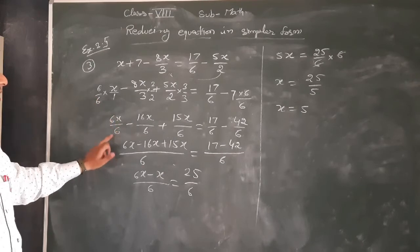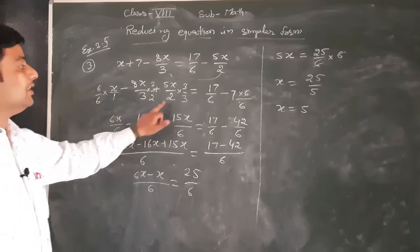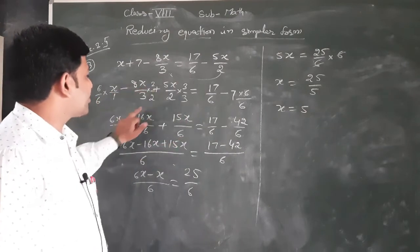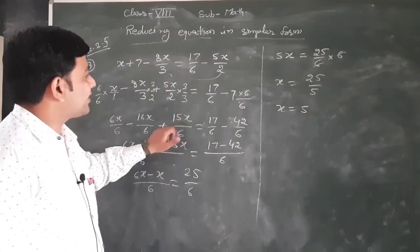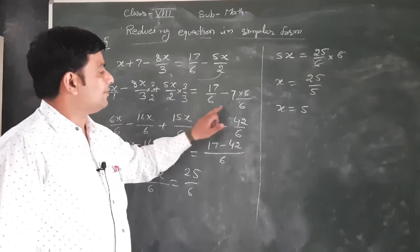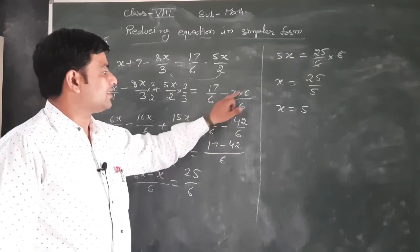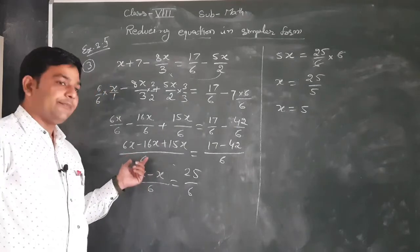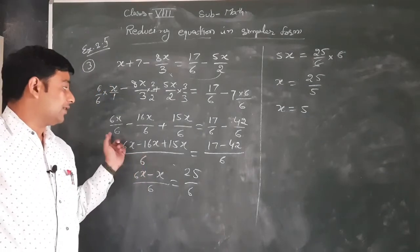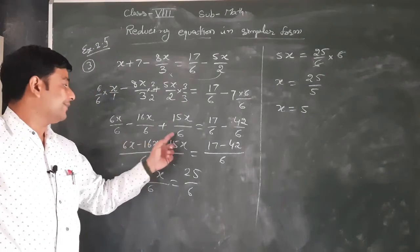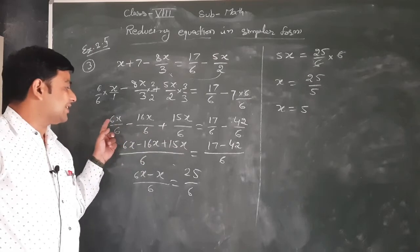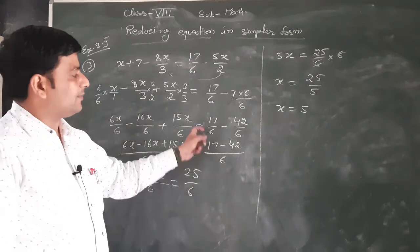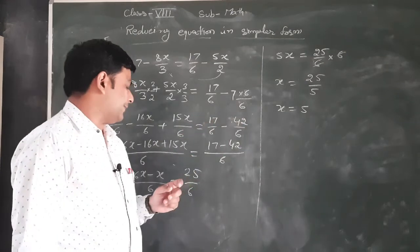Denominator same बनाएंगे: 6×1 = 6, 3×2 = 6, 2×3 = 6। इधर 6x, यह 8×2 = 16x, यह 5×3 = 15x। इधर भी LCM 6 हो जाएगा: 17/6 और 7×6 = 42। So with LCM 6: we get 6x - 16x + 15x on one side, and 17 - 42 on the other.